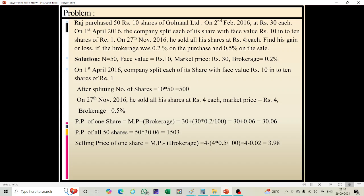Selling price of 1 share equals market price minus brokerage: 4 minus (4 into 0.5 upon 100) equals rupees 3.98. At the time of selling, Raj has 500 shares due to splitting. Total selling price of 500 shares is 3.98 into 500, which equals rupees 1,990.